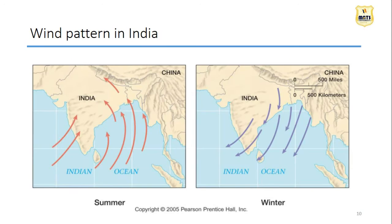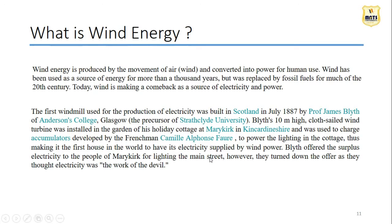This is the wind pattern in India. In summer, we have inward wind from the Bay of Bengal or from the Arabian Sea. Now that you understand what wind is, the types of wind, and how wind is created and altered, we move to how wind energy is produced.